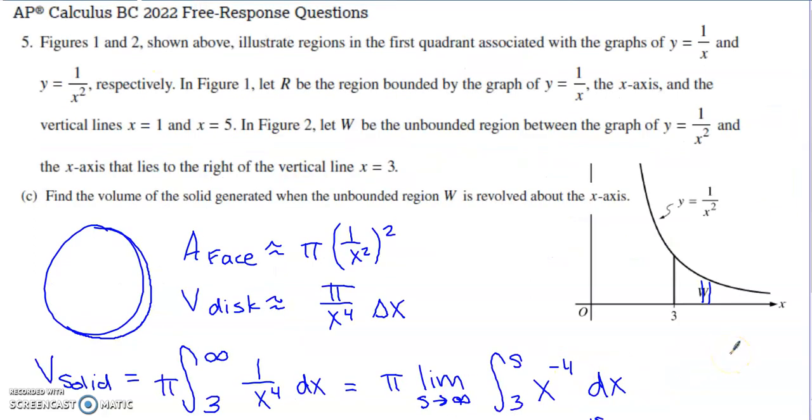The last part finally deals with the other figure. This is not the same graph we've been looking at. This is figure 2 finally. What tells us we need to use figure 2 is we're no longer dealing with region R, we are now dealing with region W. Find the volume of the solid generated when the unbounded region W, it's unbounded because it starts at X equals 3 and extends infinitely outward along the X-axis, is rotated about the X-axis.